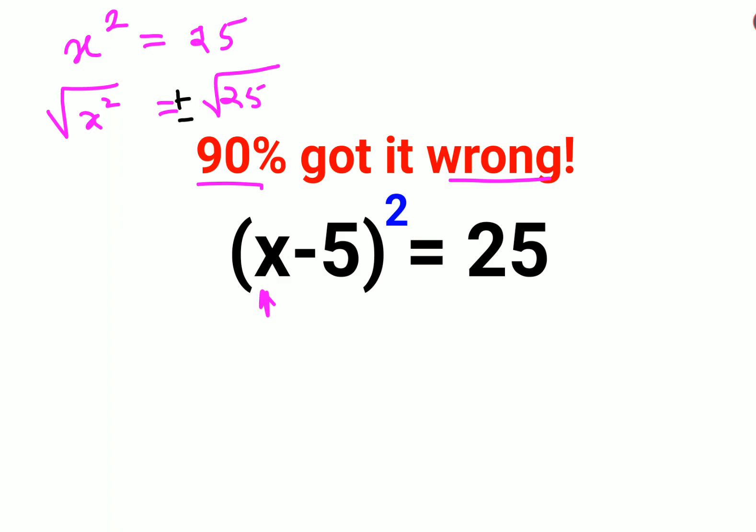So here in this case, the value of x comes out to be plus or minus 5. So similarly over here we can say x minus 5 is equal to, when I take square root of 25, it comes out to be ± 5.